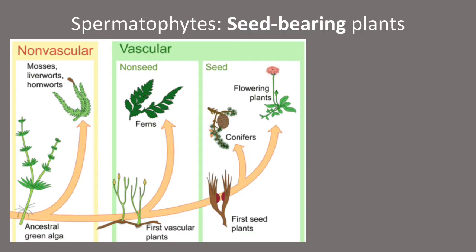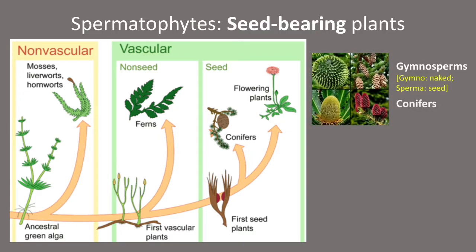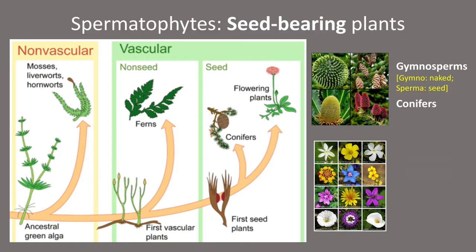Spermatophytes, or seed plants, can be grouped into two major groups based on the location of the seeds. First, Gymnosperms — its name derived from two Greek words: 'gymno' meaning naked and 'sperma' meaning seed; this group is widely known as conifers. The second group is Angiosperms, from 'angio' meaning enclosed and 'sperma' meaning seed.